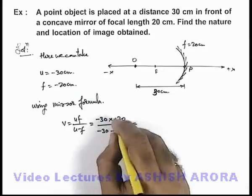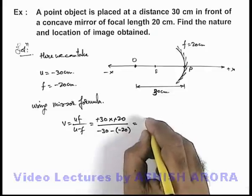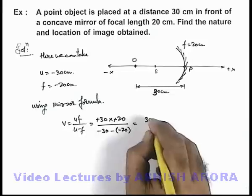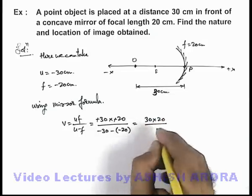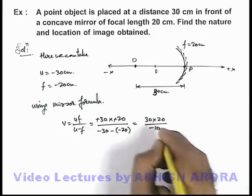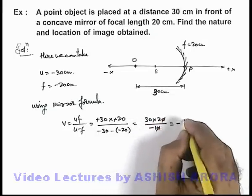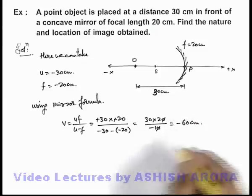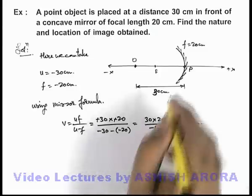That'll be 30 into 20, minus gets cancelled out. 30 into 20 divided by minus 10. On simplifying, we are getting the result to be minus 60 centimeter. That means the image will be obtained at the left of